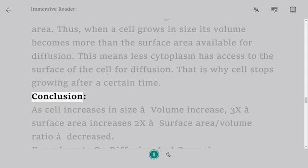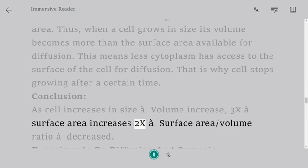Conclusion: As cell increases in size: volume increases 3x, surface area increases 2x, surface area/volume ratio decreased.